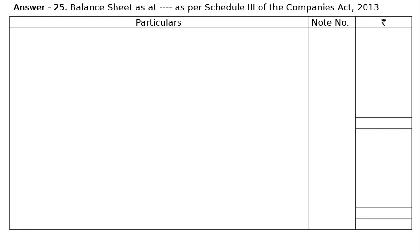The question is to prepare a balance sheet of the company as per Schedule III of the Companies Act 2013. The balance sheet is as at a date which is not given. The name of the company is also not provided. Particulars, note number, and rupee symbol columns will be there.